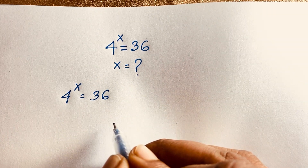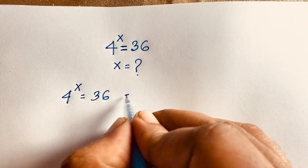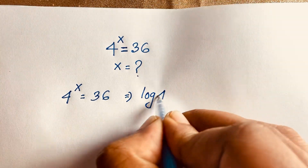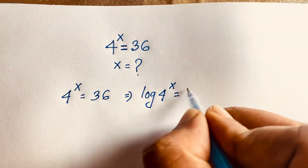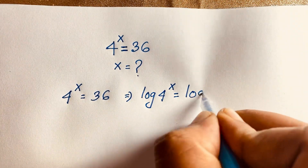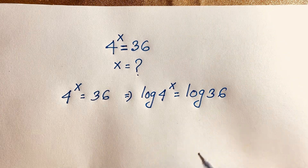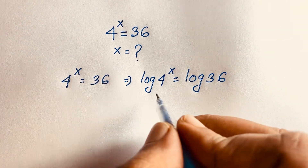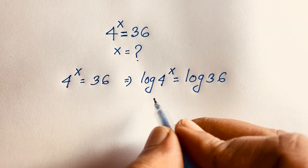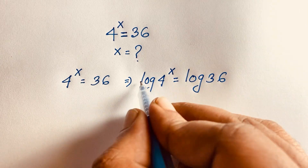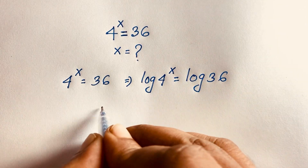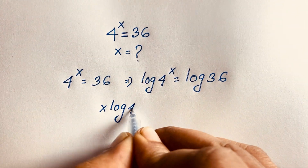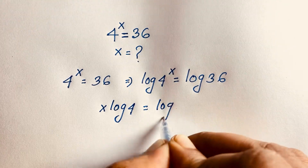Now, I apply log to both sides. So log of 4 to the power x is equal to log 36. Now, in this expression, we know the natural log rule: this exponent moves to the front. So it will be x log 4 is equal to log 36.